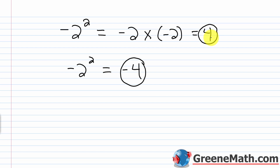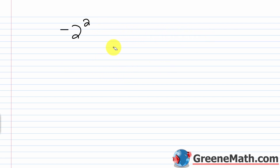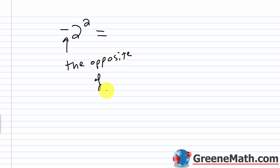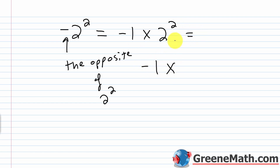It's a notational issue. When you write negative 2 squared without parentheses, what you're really saying is the opposite of 2 squared. We can write this as negative 1 times 2 squared. Using order of operations, we perform the exponent first: 2 squared is 4. So we get negative 1 times 4, which equals negative 4. That's where the wrong answer came from — we just didn't have the right notation.